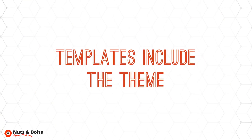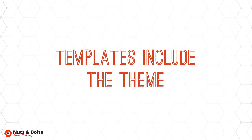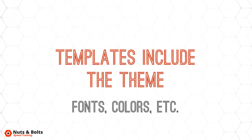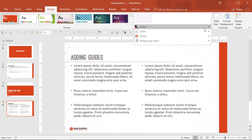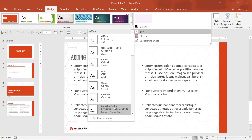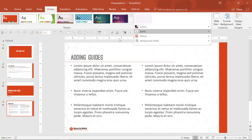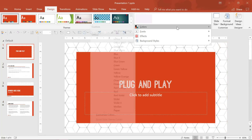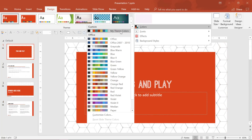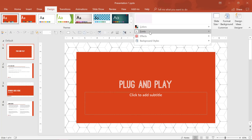Number 8: include your theme files with the template. A template is actually more than the blueprint of the layout — it also includes the theme, and the theme is composed of font and color pairings among other things. While it's not necessary to send the font and color files along with your template, it's a best practice because it ensures that when you open up the design options, your custom formatting settings are visible to the end user.